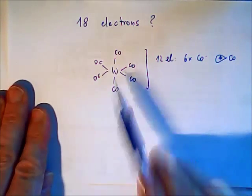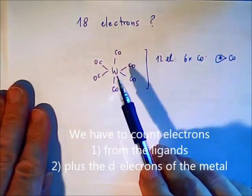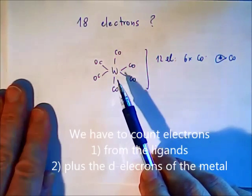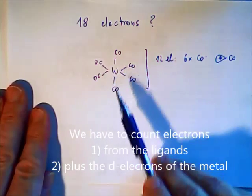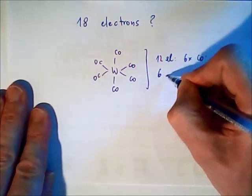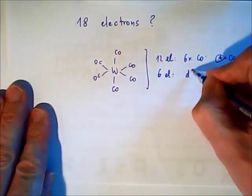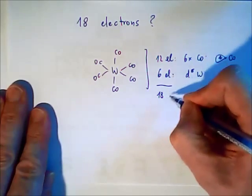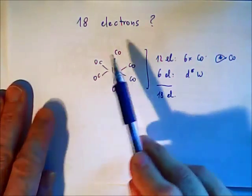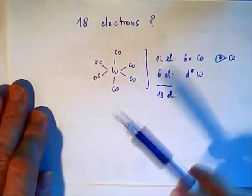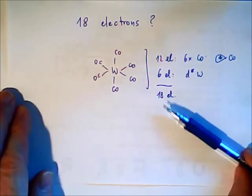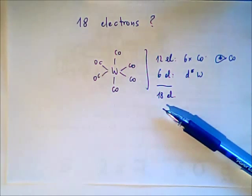Now these are 12 electrons. But the tungsten also has electrons and here we are looking only at the d electrons. Tungsten, if we check in the periodic table, is in column number 6. That means the missing 6 electrons come from the d6 electrons in tungsten, together 18 electrons—18 valence electrons containing in the bonds. This configuration means this number of electrons indicates a very stable compound.